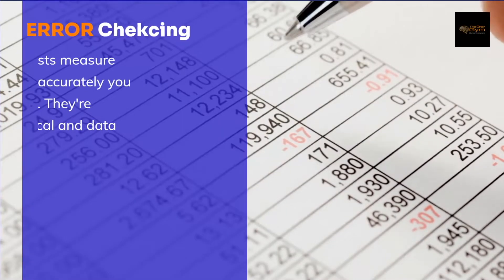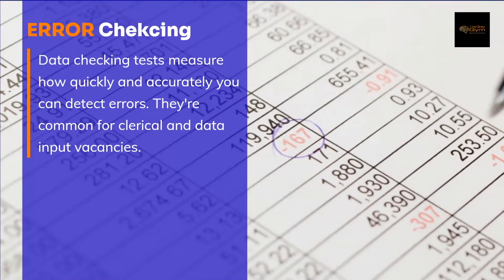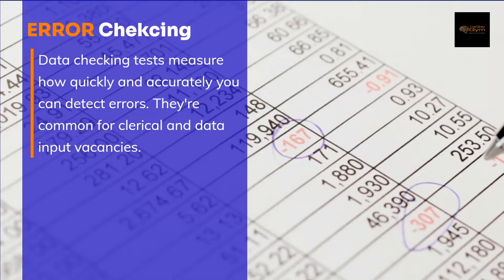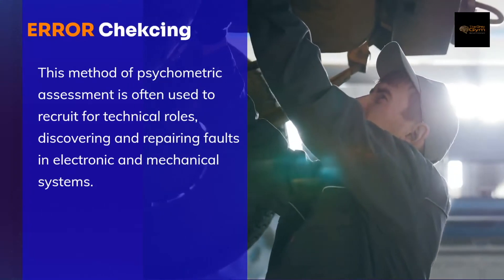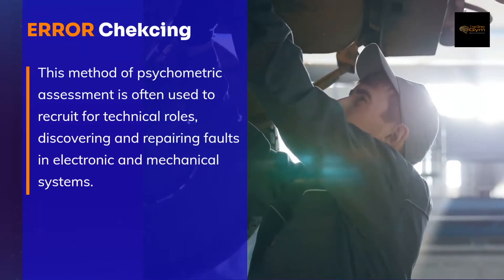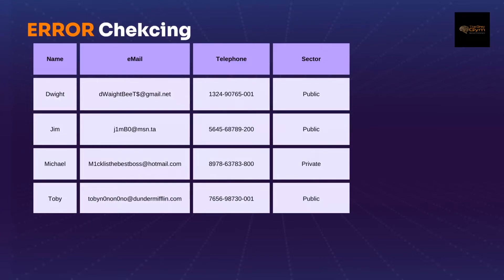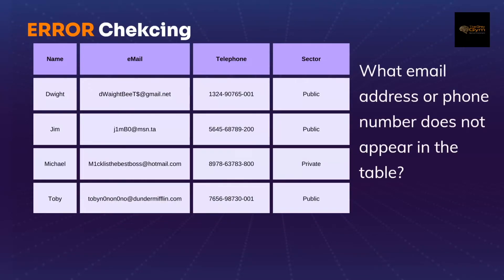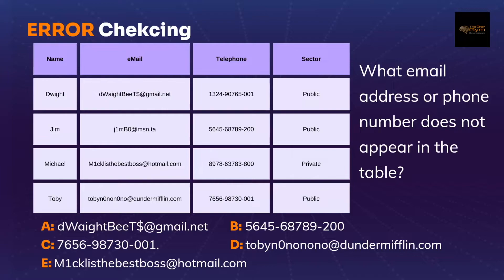Moving along to error checking. Data checking tests measure how quickly and accurately you can detect errors. They are common for clerical and data input vacancies. This method of psychometric assessment is often used to recruit for technical roles, discovering and repairing faults in electronic and mechanical systems. Here's the example: we have data including names, emails, telephone numbers and sector. The question is: what number or email address does not appear in the table? If we had all the time in the world you'd get it correct, but what adds to the stress levels is the fact that it is timed, so you have to do this as quickly as possible. Pause the video and leave your answer in the comments.